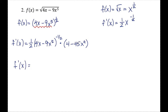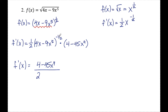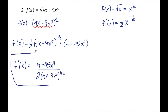So I'll rewrite this as one big fraction and make the negative exponent positive. The 4 minus 45x to the fourth stays in the numerator since it's raised to the first. The one half contributes a 2 in the denominator. The term raised to the negative one half moves to the denominator as a positive one half, giving 4x minus 9x to the fifth, all to the one half power in the denominator. That is f prime of x using the chain rule.